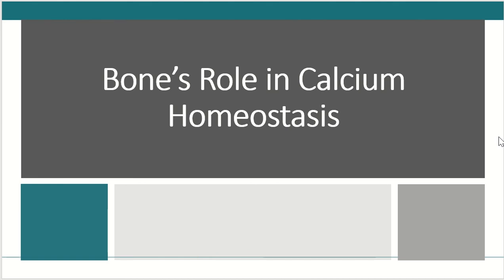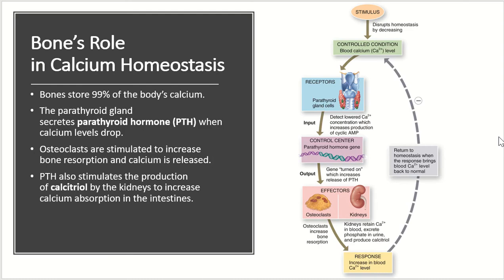Next we need to talk about bone's role in calcium homeostasis, which is a major function of bone tissue in the body. There is a negative feedback loop used to maintain calcium homeostasis. Bone is responsible for storing about 99% of the body's calcium. The parathyroid gland secretes parathyroid hormone when calcium levels drop, and osteoblasts are then stimulated by this parathyroid hormone to increase bone resorption so calcium is released. Parathyroid hormone also stimulates the production of calcitriol by the kidneys, which increases calcium absorption in the intestines.